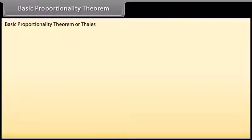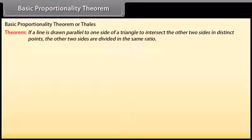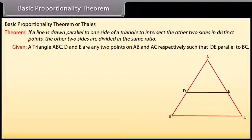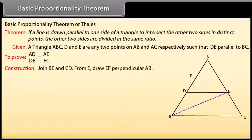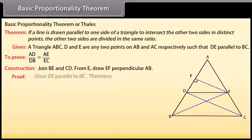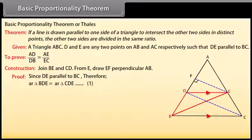Basic Proportionality Theorem, or Thales theorem: if a line is drawn parallel to one side of a triangle to intersect the other two sides in distinct points, the other two sides are divided in the same ratio. Given: triangle ABC, D and E are any two points on AB and AC respectively such that DE is parallel to BC. To prove: AD/DB = AE/EC. Construction: join BE and CD; from E draw EF perpendicular to AB. Mark it as one.